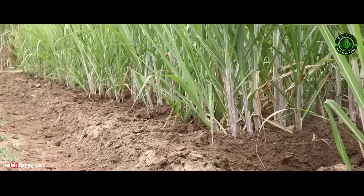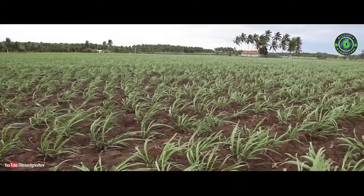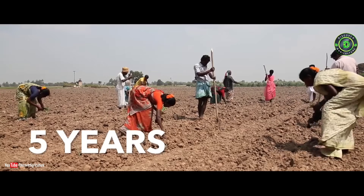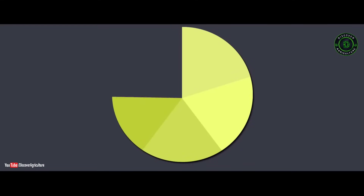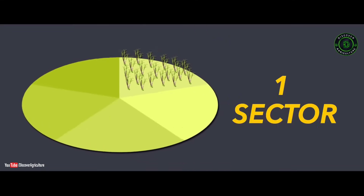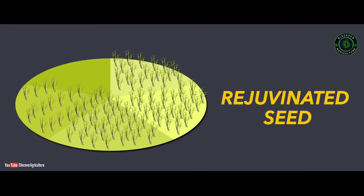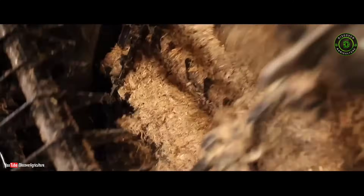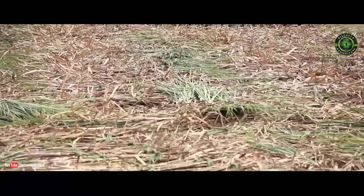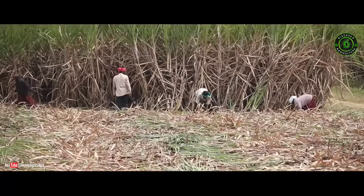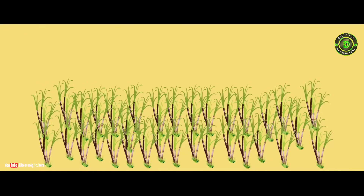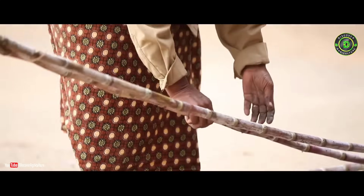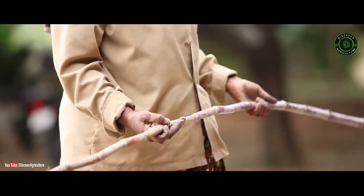Heat treatment will render the seed free from disease for about five years. Therefore, a well-planned scheme to replace seed once every five years must be devised. The whole operational area can be divided into five sectors and one sector may be covered each year so that the seed is replaced with rejuvenated seed once in every five years. If all sugar mills follow this three-tier nursery program and provide good quality seed of improved varieties to farmers, the average yield per hectare can be raised by 10 to 15%.